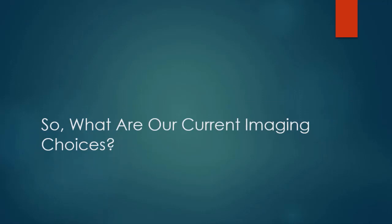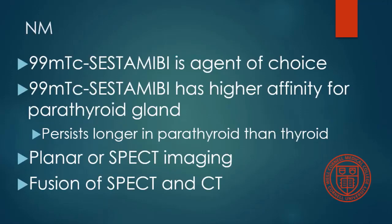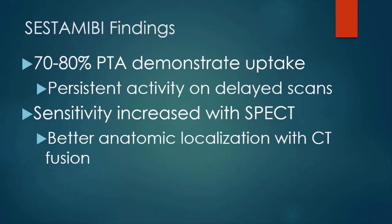So what are our current imaging choices? Nuclear medicine still remains very important in this evaluation. Sestamibi with technetium-99m is the agent of choice — it has a high affinity for the parathyroid gland and persists longer in parathyroid tissue than in other glandular tissue, notably the thyroid. You can do both planar and SPECT imaging, and if you want, you can fuse SPECT with CT. Sestamibi is taken up by parathyroid adenomas.